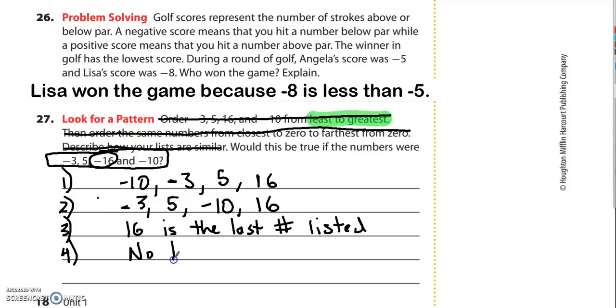And it doesn't ask me to explain, but I'm going to anyway. No, because negative 16 would have been listed first. All right, well we are done with page 18 and we're actually done with lesson 1.2.